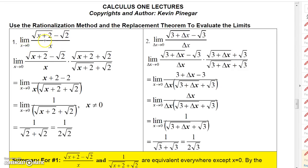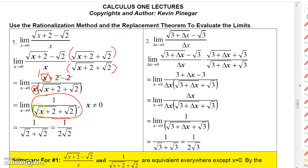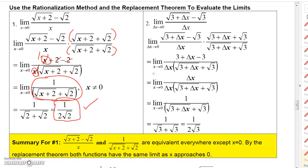For (√(x+2)−√2)/x as x approaches 0, plugging in gives 0/0. Rationalize the numerator by multiplying top and bottom by (√(x+2)+√2). The numerator becomes (x+2)−2 = x. Then x/x = 1, leaving 1/(√(x+2)+√2) as the replacement function. Letting x go to 0: 1/(√2+√2) = 1/(2√2). That's the exact answer your teacher will want.